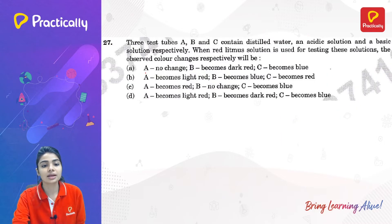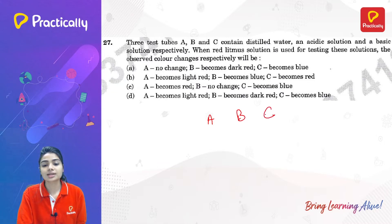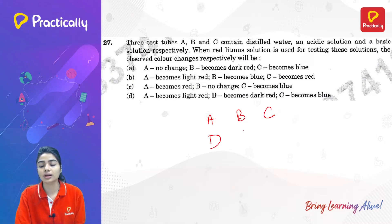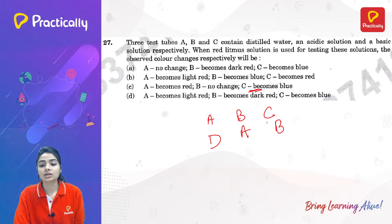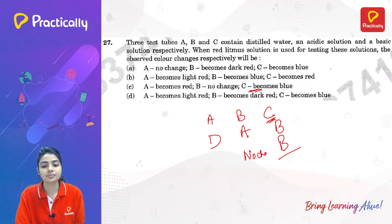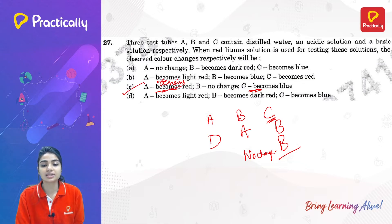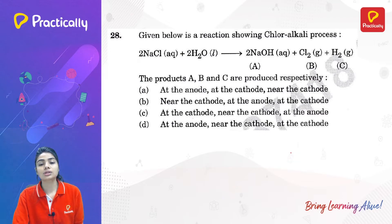Three test tubes A, B, and C contain distilled water, an acidic solution, and a basic solution respectively. When red litmus solution is used for testing, the observed color changes are: A (distilled water) remains red, B (acidic solution) shows no change and remains red, and C (basic solution) changes from red to blue. So the answer is option C.